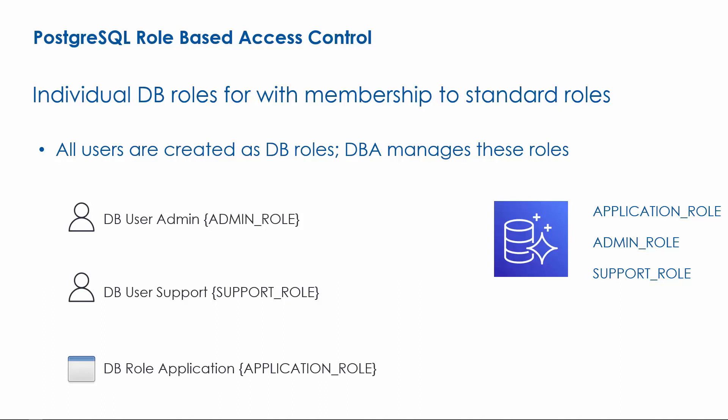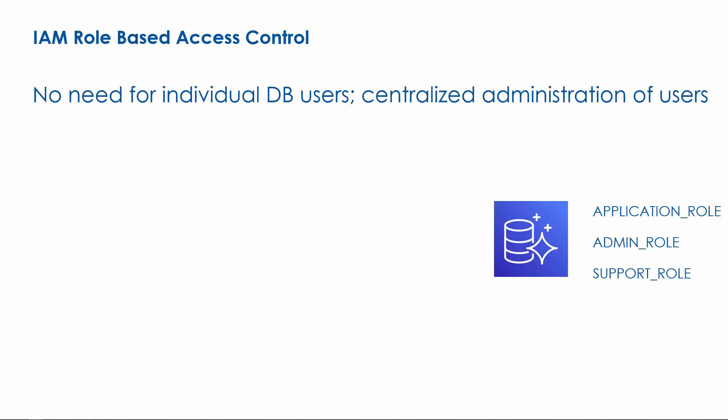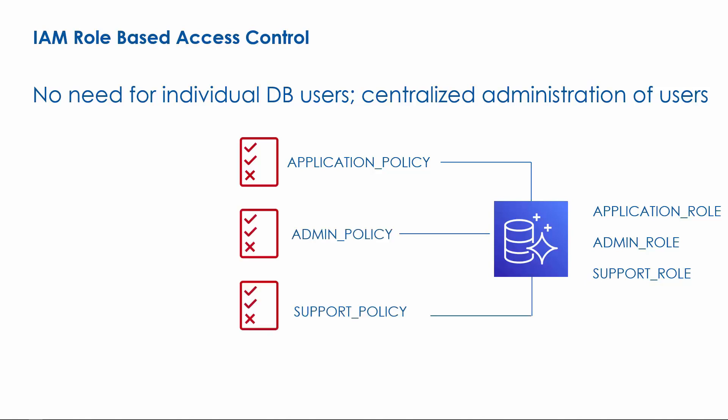If we use IAM authentication, this setup will change. For IAM authentication, we still need to create the standard database roles each with appropriate permissions, but we do not need to create roles for individuals and applications. Instead, we will create standard IAM policies corresponding to each of these standard roles. In this example, we will have three IAM policies: application policy, admin policy, and support policy. These policies have the allowed permission for accessing the appropriate resource on the database.